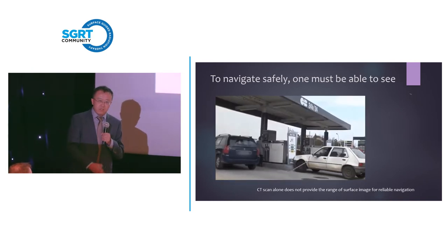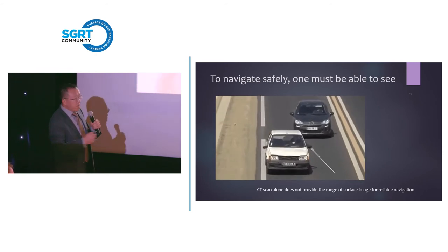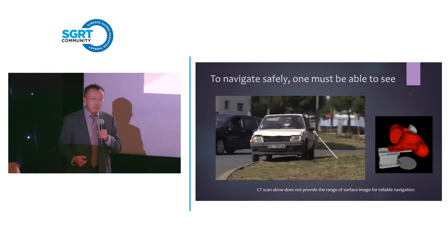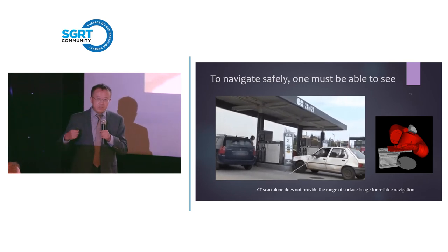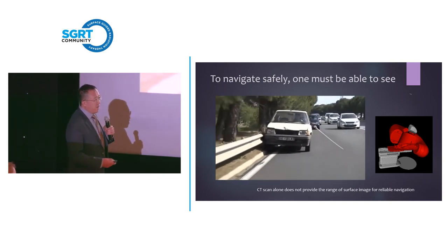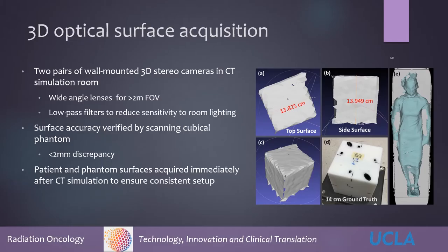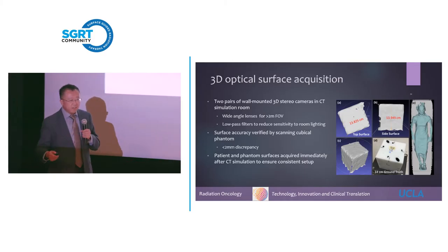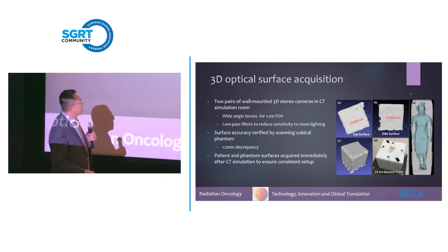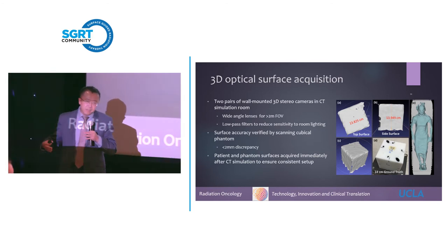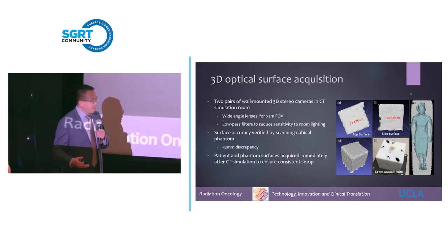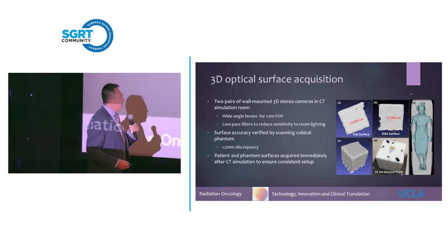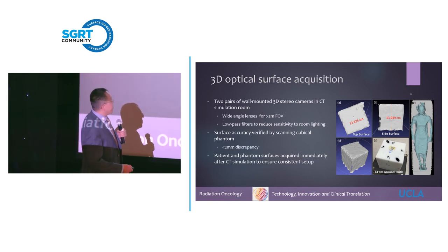Is it really so difficult to deliver 4Pi? It's like driving a car — is it so difficult to drive from point A to point B? It is difficult only because you cannot see. When you cannot see, you're going to have a collision. This is where I find the surface guided imaging method so useful for my research and for going forward with 4Pi delivery.